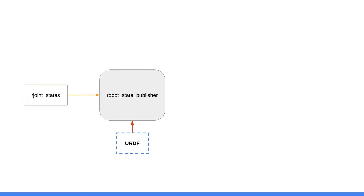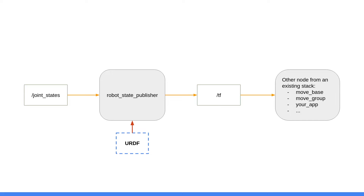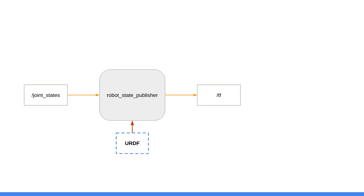Once you have the RobotStatePublisher node, the URDF as a parameter, and a JointState topic, then this RobotStatePublisher node is able to publish the TF directly. To publish the TF, you don't really need to understand everything about TF — you just need a valid URDF and a JointState topic. And then if we want to go further, the TF is going to be used by existing stacks or applications — for example, from the navigation stack, from MoveIt, or from any custom app that you have.